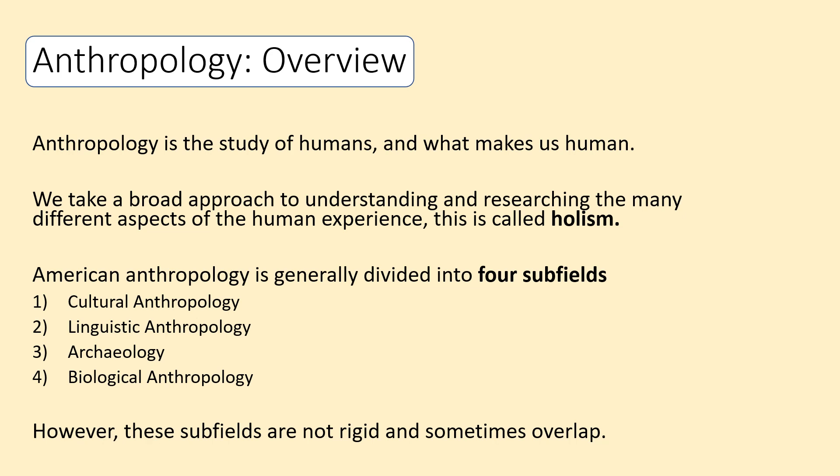In the United States — and this is not uniform in different countries — you can sort of place anthropology into four separate subfields. One is cultural anthropology, which is the largest of the subfields. It primarily deals with living humans and how they interact with each other. For instance, if you're looking at individuals in a village in India and how they interact with gender and power dynamics, that's very much cultural anthropology.